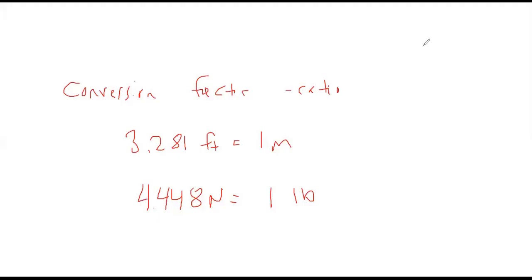Alright, so this is the factor label method. It's a method of conversions. These are some example conversions. Another example of a conversion is 2.54 centimeters equals one inch. What we want to do is convert from one unit or one value into other values. I'm going to show you how we use the factor label method to do that.